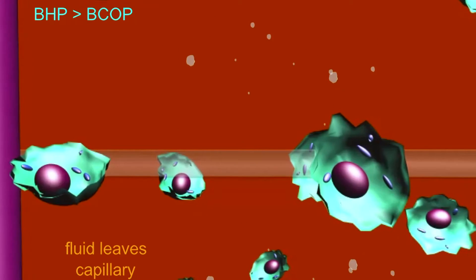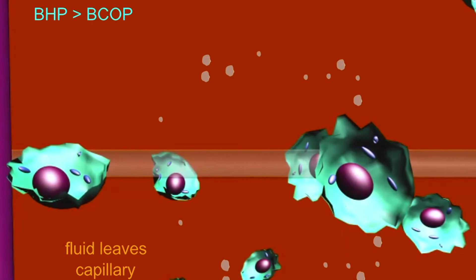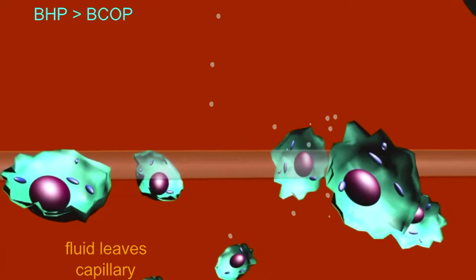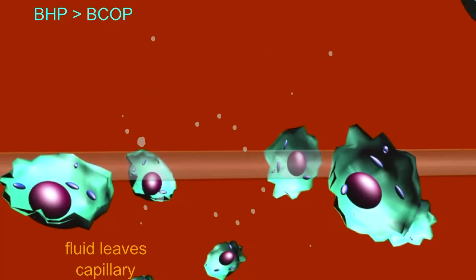At the venule end of the capillary, the opposite situation is true. Because the blood volume is less, the blood pressure, the outward-pushing force, has declined.